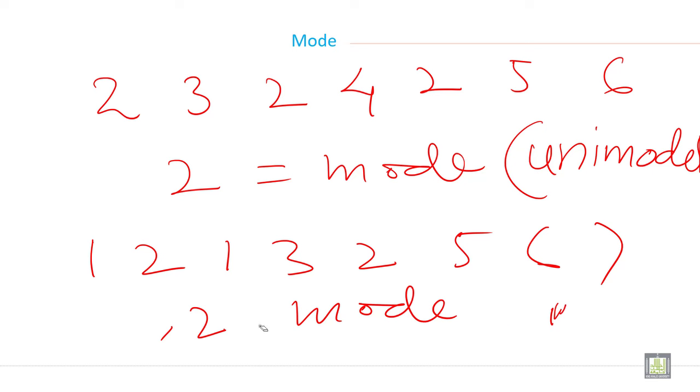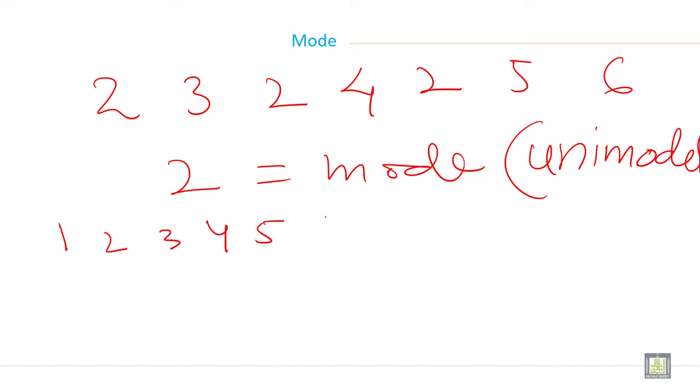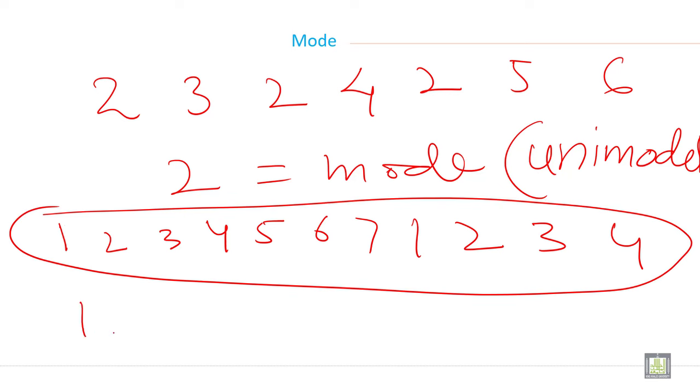And there is another example. There is another example of multimodal. I will give you one more example. For example, suppose 1, 2, 3, 4, 5, 6, 7. And then 1, 2, 3, 4. So 1, 2, 3, 4 is repeated in this data set. 1, 2, 3, 4 is repeated two times. So 1, 2, 3, 4 is multimodal. Because all data are repeated same time. So it is called multimodal.